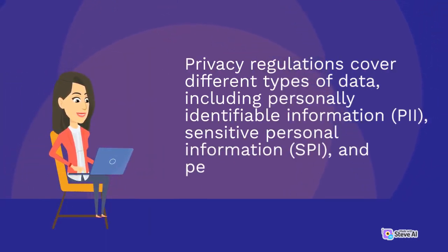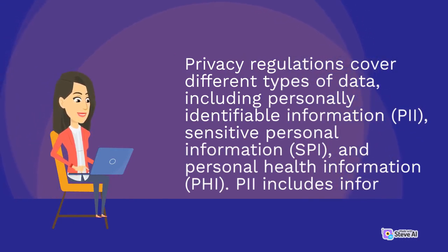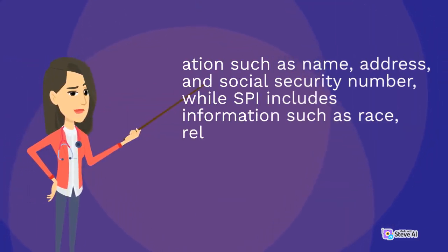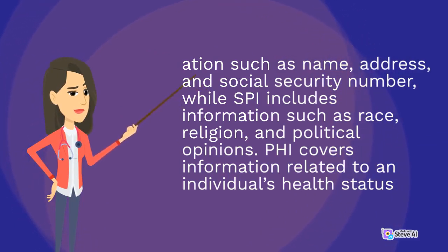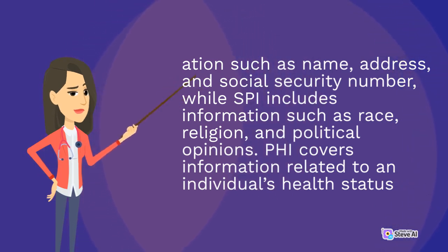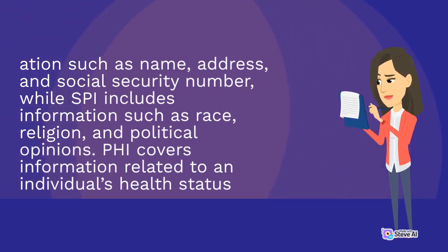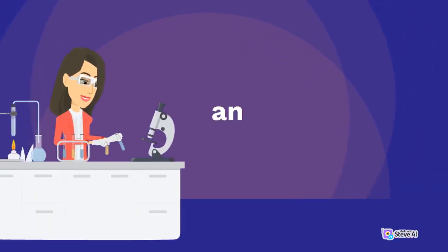Privacy regulations cover different types of data, including personally identifiable information, PII, sensitive personal information, SPI, and personal health information, PHI. PII includes information such as name, address, and social security number, while SPI includes information such as race, religion, and political opinions. PHI covers information related to an individual's health status and medical history.